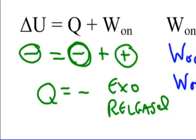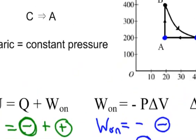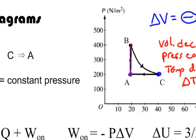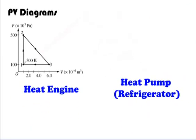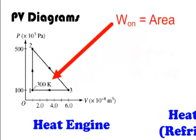One key takeaway: if you go from A to B to C back to A — one full rotation — the change in internal energy for the whole process is zero, because you end up back at the same state. Also, if you take the area under the curve on a PV diagram, that gives you the work done on the gas.